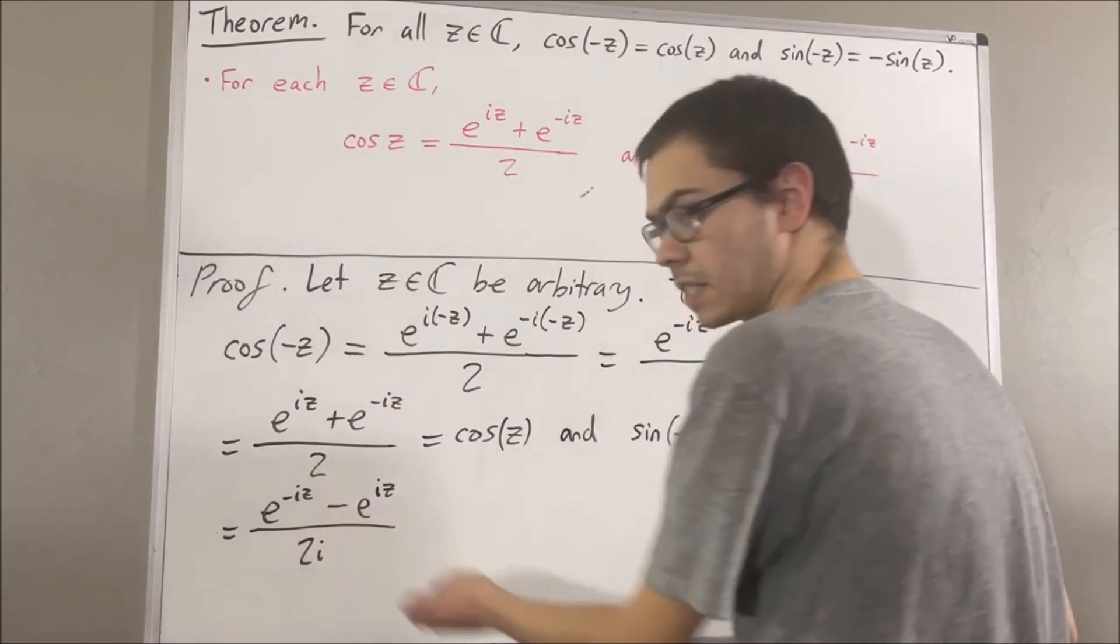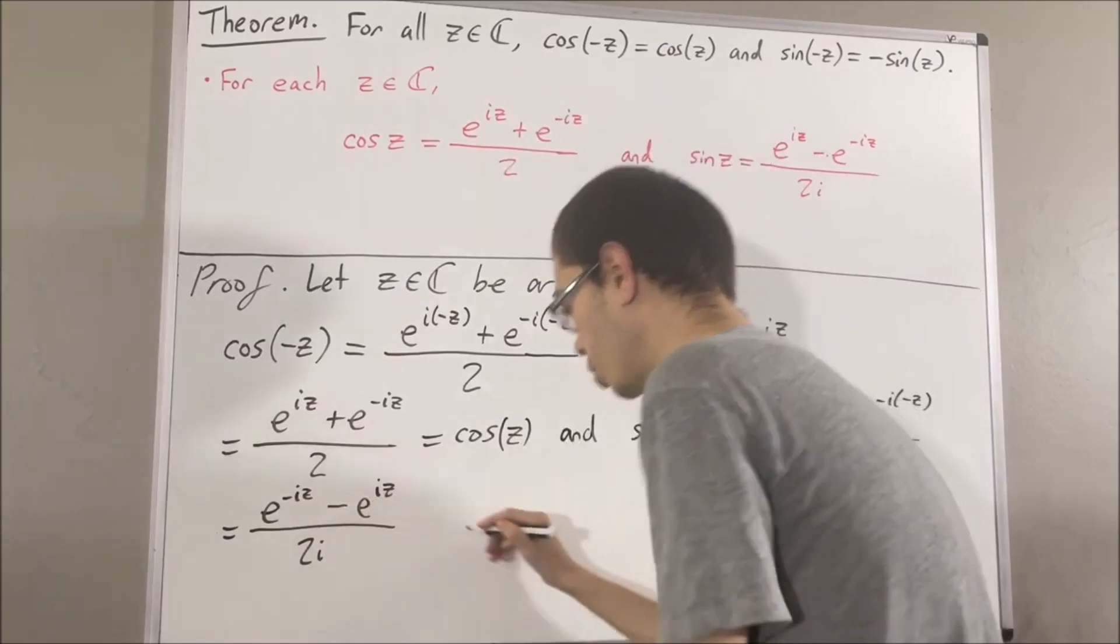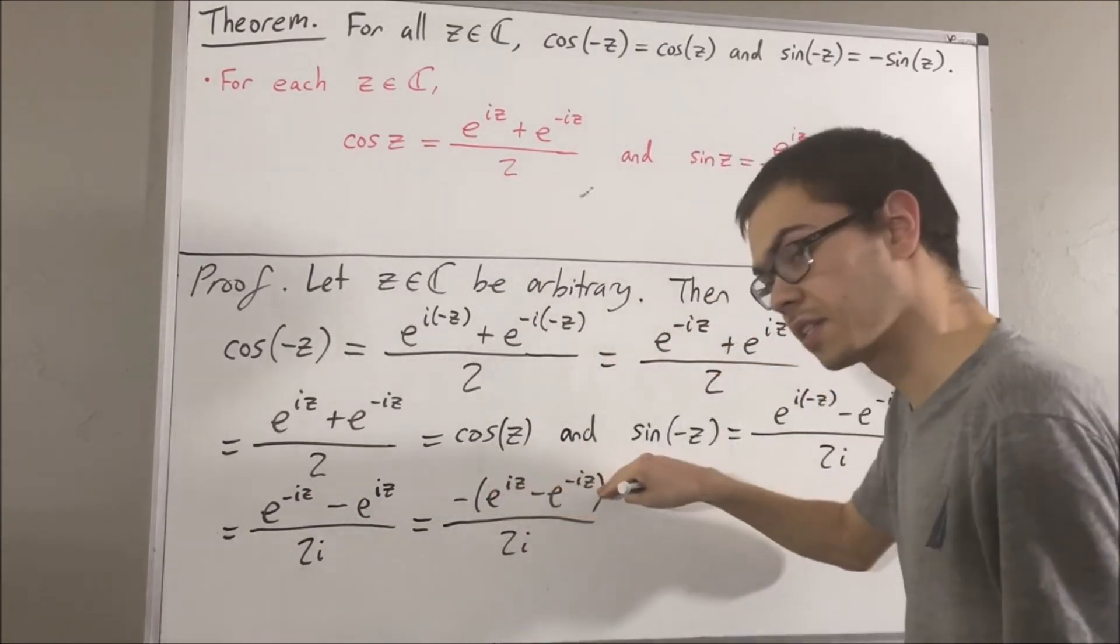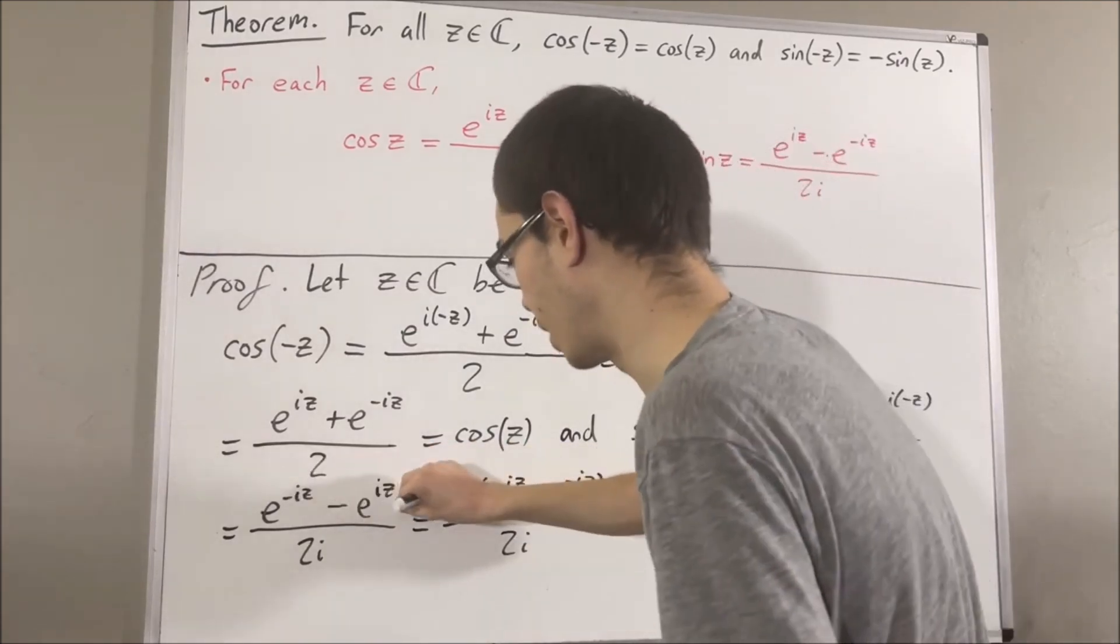We can factor out a negative from the numerator. If you distribute the minus sign across, you get precisely what we have here, which is negative times e to the iz minus e to the negative iz over 2i.